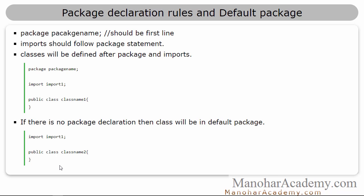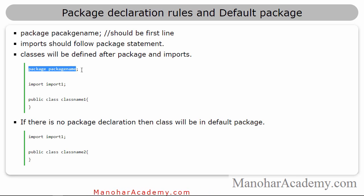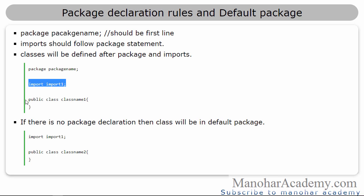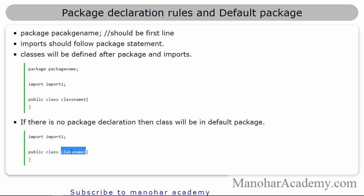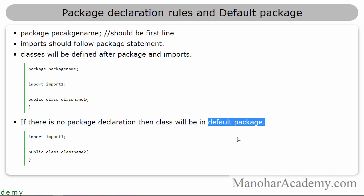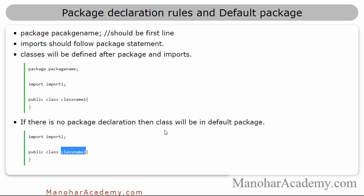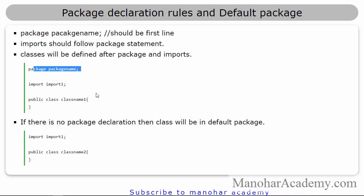Now there are some more rules I discussed in the previous lesson as well. The package declaration should be the first line in the source file — if it is present, it must be the first line, followed by import statements, followed by class definitions. If we don't have a package declaration, the class will belong to the default package. All classes that don't have a package declaration belong to that default package.